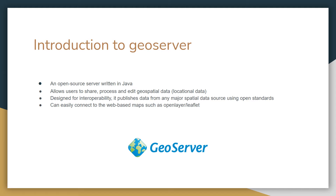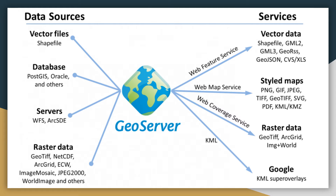GeoServer acts as the server in the middle, converting different types of data sources into services like Web Feature Service (WFS), Web Map Service (WMS), Web Coverage Service (WCS), and KML for Google Maps. Data sources can be vector files, databases like PostGIS or Oracle, services like WFS, or raster datasets such as GeoTIFF, NetCDF, ImageMosaic, and JPEG2000.